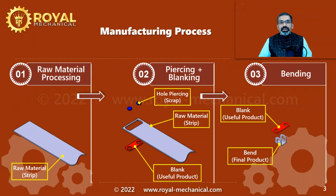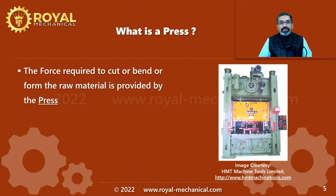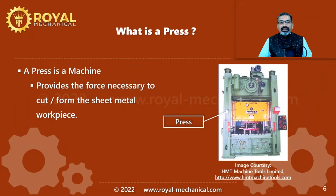In the previous video lesson I had explained the manufacturing process for the power screw support bracket. The manufacturing process was done in three steps: step one, processing the raw material; step two, perform the piercing and blanking operation; step three, perform the bending operation. To perform these operations we need a certain amount of force, which is provided by a press machine. A press is a machine which provides the necessary force to cut or form the sheet metal workpiece.